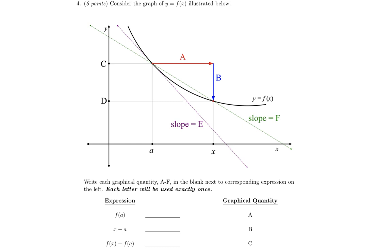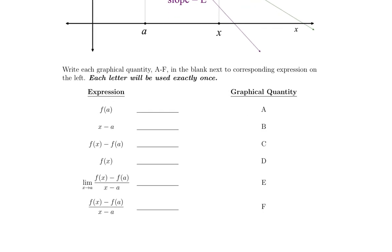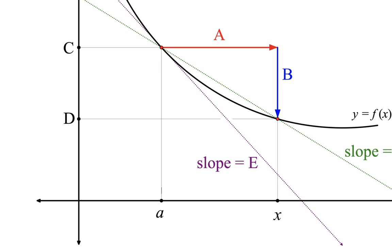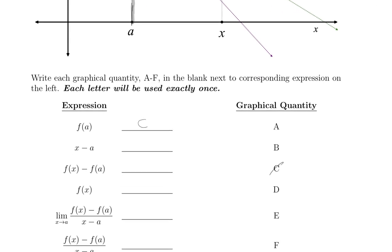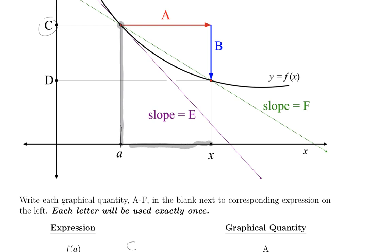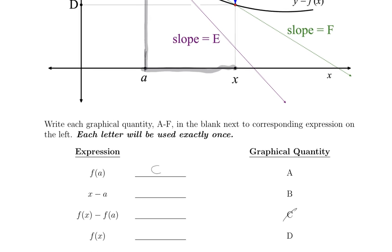On to question 4. We're given a graph of f of x with some added information, and we're supposed to match each of these quantities to the corresponding value shown on the graph. First, looking at f of a — if we evaluate the graph at point A and carry it up, that has a value of C. So f of a equals C. For x minus A, that would be the distance from here to here, and looking at the graph that distance is given by A. So x minus A equals capital A.